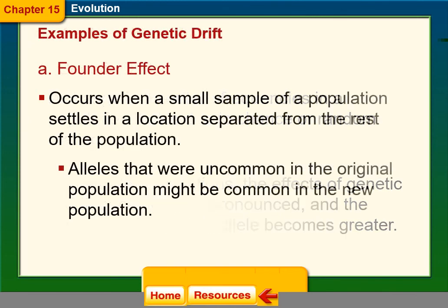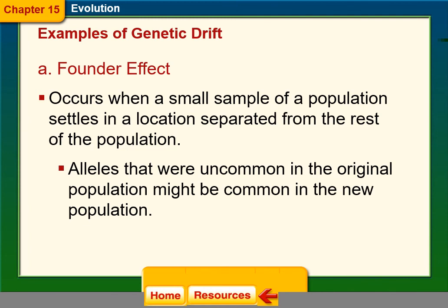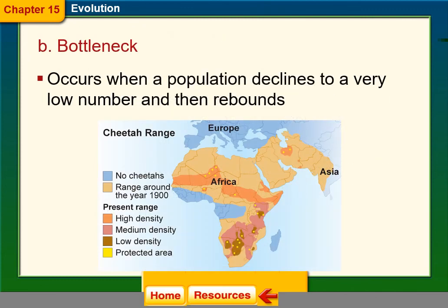One example of genetic drift is the founder effect, which occurs when a small sample of a population moves into a different area, separated from the rest. Those individuals are now the founders of that area, and their alleles become the founder alleles. Alleles that were uncommon in the original population might now become common in the new one.